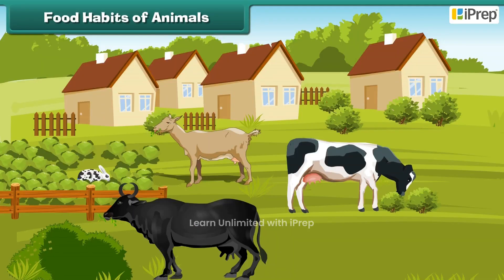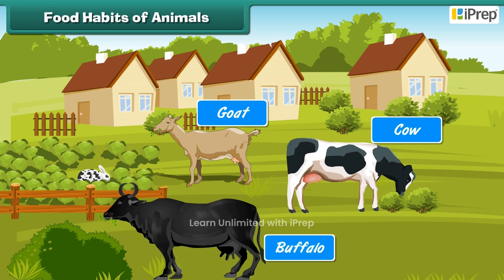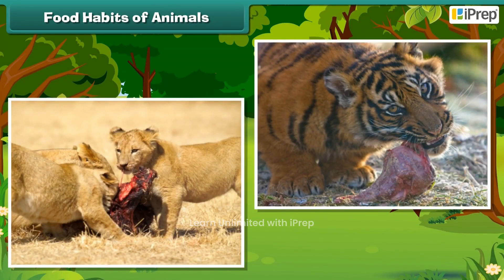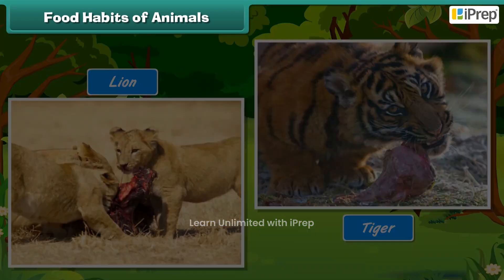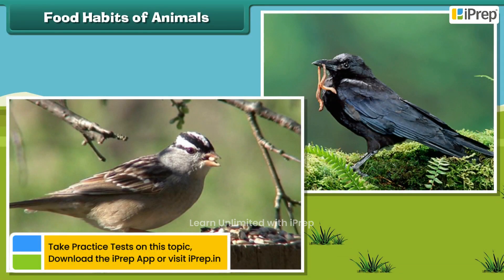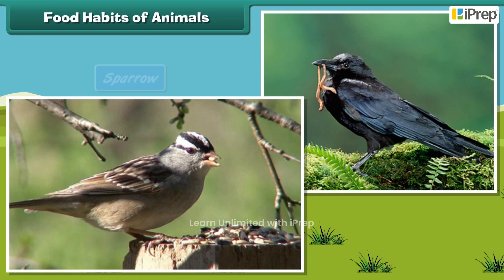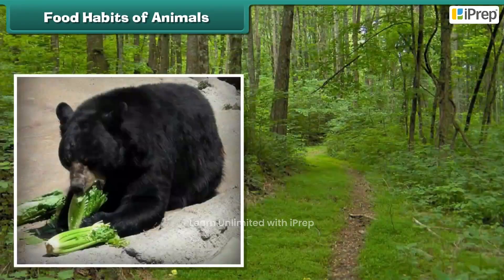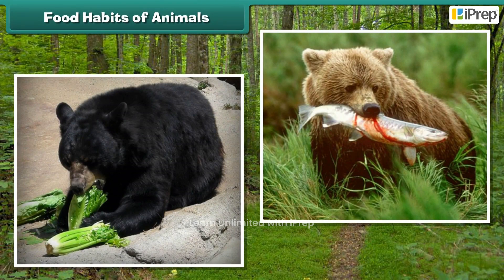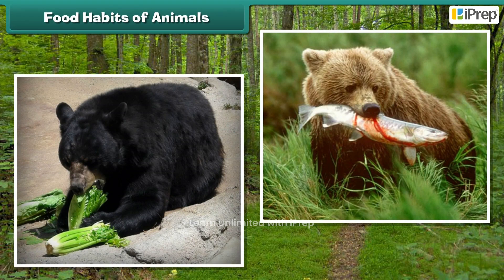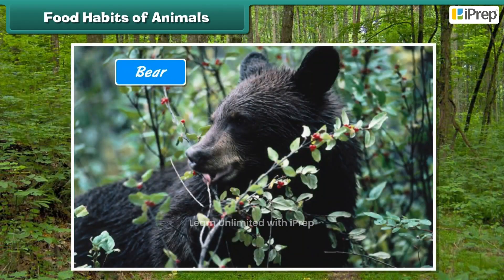Animals have different food habits. Some animals eat plants, grass, etc. — for example, cow, goat, buffalo, etc. Some others eat meat — for example, lion, tiger, etc. Some animals eat seeds and worms — for example, sparrow, crow, etc. Some animals eat both plants and meat — for example, bear. Some animals are fond of special food items; for example, the bear is fond of honey.